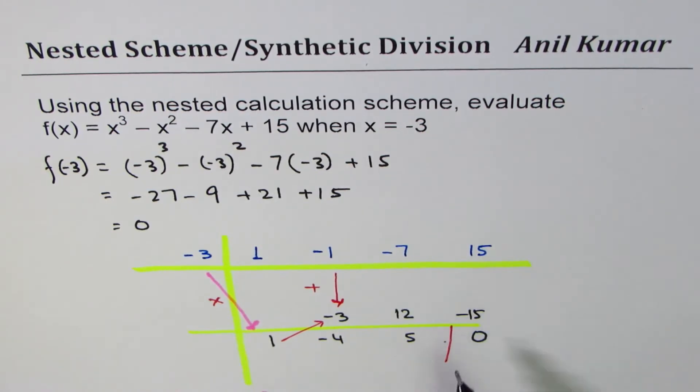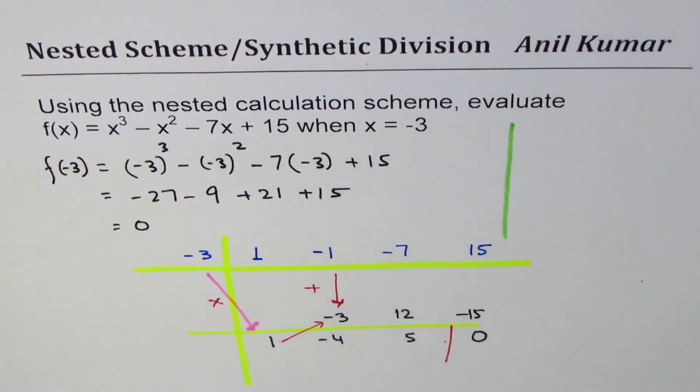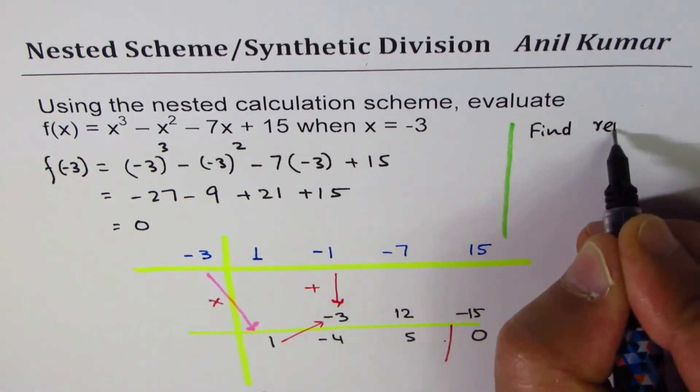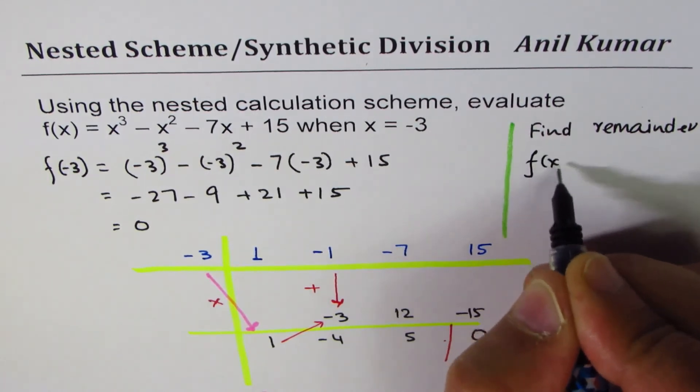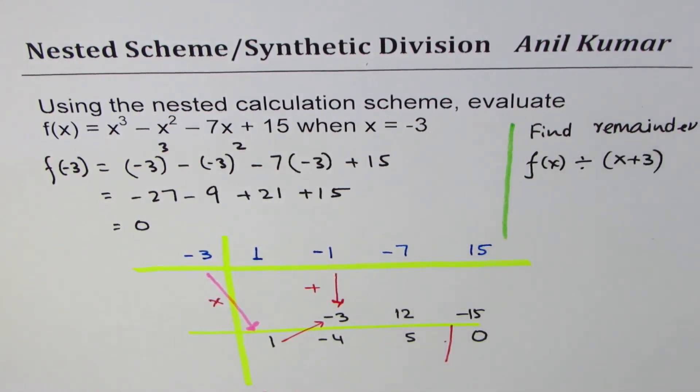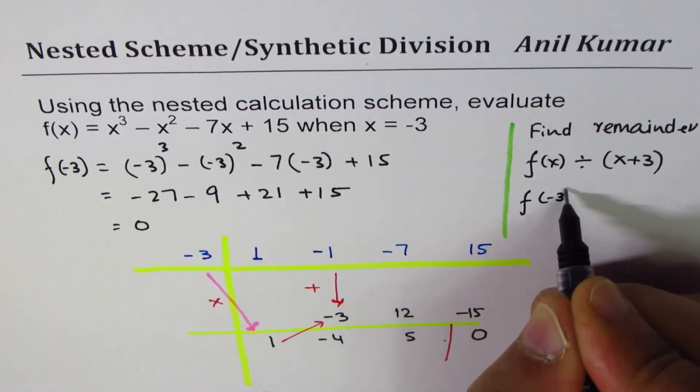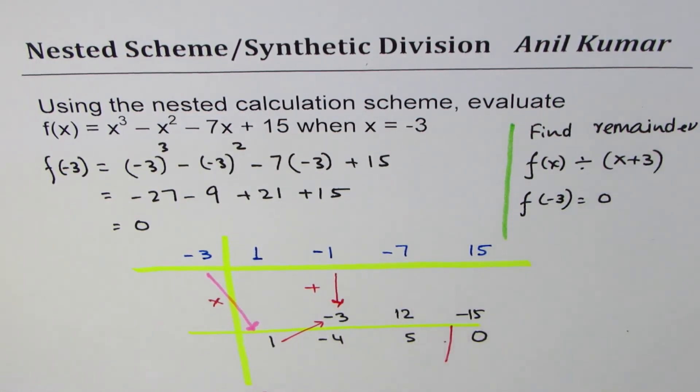For students who know what synthetic division is, you can treat this question as: find remainder when f(x) is divided by x + 3. You get the same value which is f(-3) = 0. We could extend this and say x + 3 is a factor of the given function.